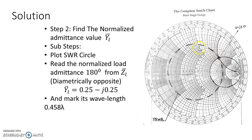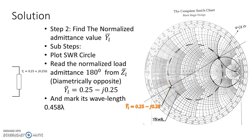Then stretch a line that passes from the center of the Smith chart through ZL, and where it cuts the circle on the diametrically opposite side — that point is YL. Reading the value, YL = 0.25 − j0.25. You can verify this by calculating the inverse of ZL = 2 + j2, which gives 0.25 − j0.25. Then stretch the line outward and mark the wavelength towards the generator scale, where the value reads approximately 0.458λ.